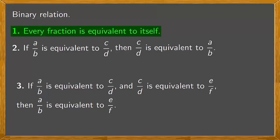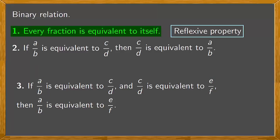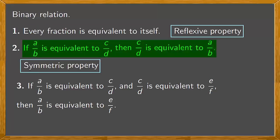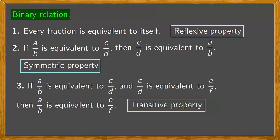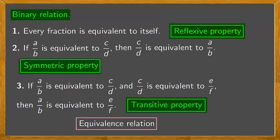The first property is called the reflexive property, the second the symmetric property and the third the transitive property. Any binary relation defined on a set that satisfies these three properties is called an equivalence relation. So the equivalence of fractions is an equivalence relation in the set of fractions.